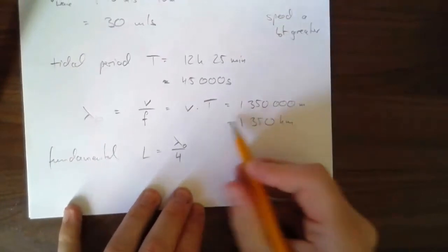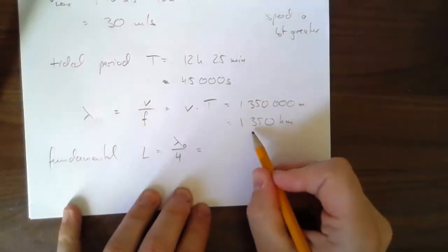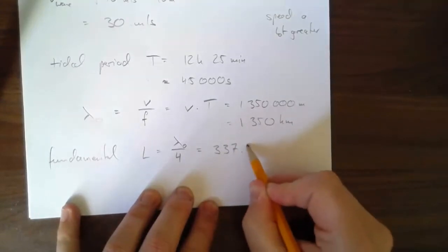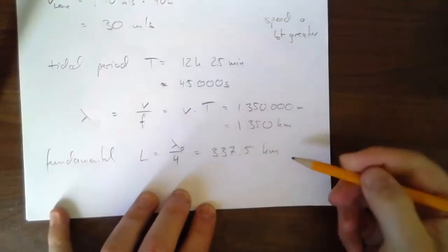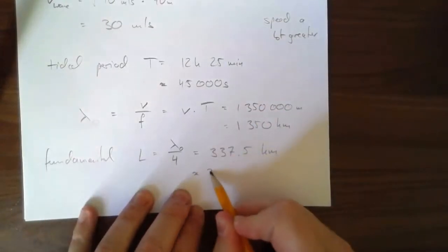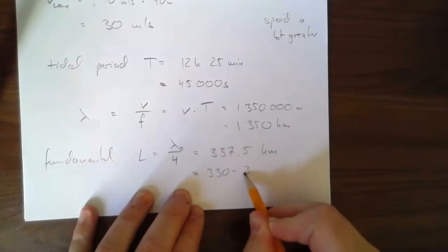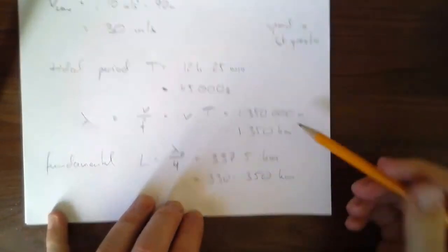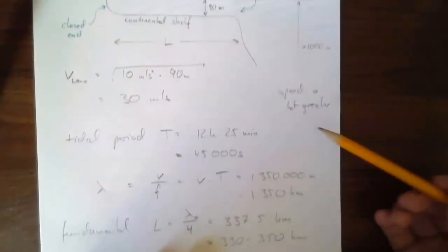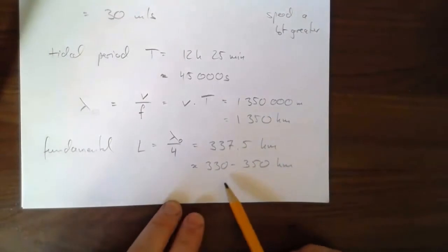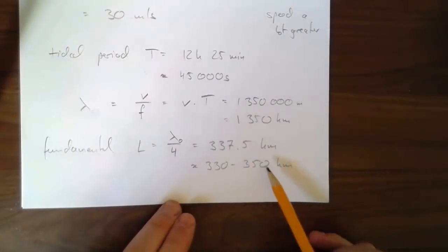Well, we'll divide this by 4. We're going to get, technically it's 337.5 kilometers, but let's be honest, we made a whole bunch of approximations. So maybe say 330 to 350 kilometers, something like that. We did some rounding. That is a fairly realistic value for the length of a continental shelf.